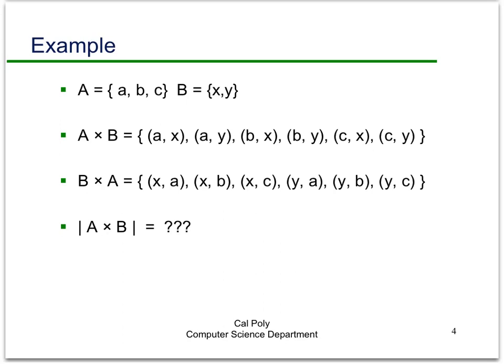Just a quick example here to illustrate the point. If A is equal to the set {A, B, C}, and B is equal to the set containing {x, y}, then A cross B is the set of ordered pairs (A,x), (A,y), (B,x), (B,y), (C,x), (C,y). So all the first elements come from A, all the second elements come from B.